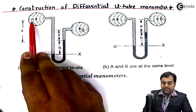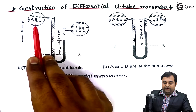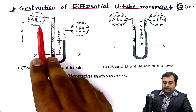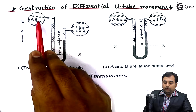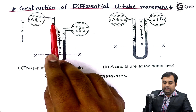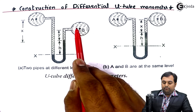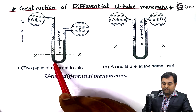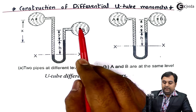In figure A, we have pipeline A and pipeline B. Both pipelines can contain different liquids. When we want to measure the difference in pressure of two different liquids, we connect this differential U-tube manometer to both pipes. From pipe A, the fluid enters the left limb of the manometer, and from pipe B, the fluid enters the right limb. The black portion shown is mercury, the heavier liquid.